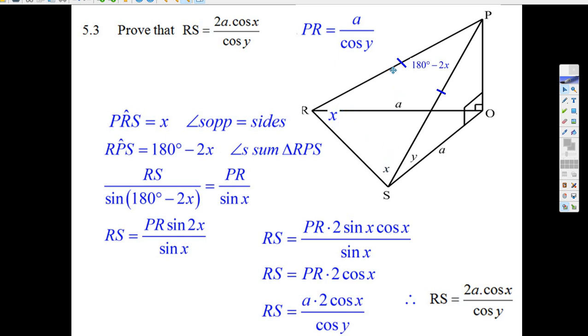Remember, sine rule is sides and angles opposite. So PR goes with X. That's good. That's going to get us somewhere. Now, 180 minus 2X is really the sine of 2X. The sine of 180 minus an angle is just the sine of that angle. So it's sine 2X and then you multiply it up here.